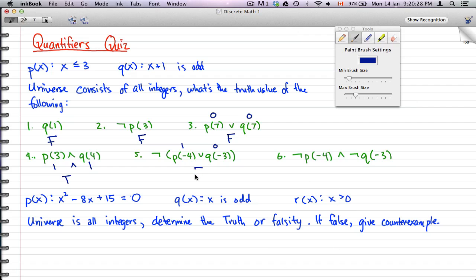And for the last one, well, you could use number 5 to answer number 6 here. So p(-4) is a 1 and q(-3) is a 0, but remember we have to negate them, so this would turn to be a 0 and that would turn into a 1. And 1 and 0 is a 0, so that is also false.